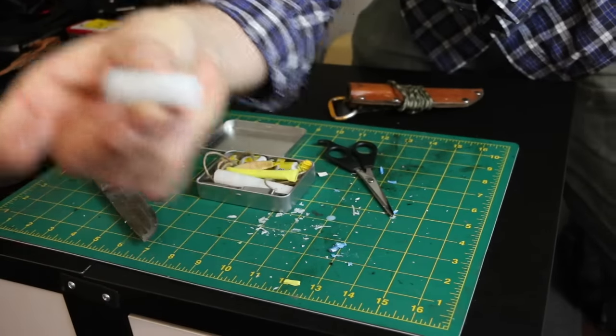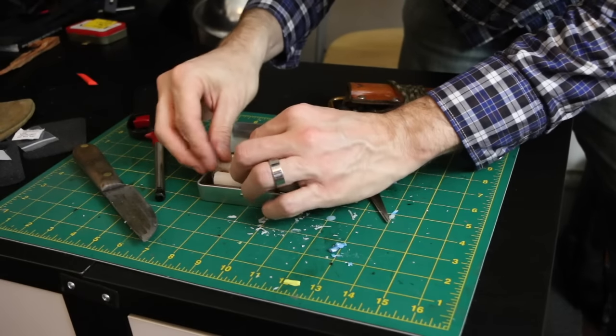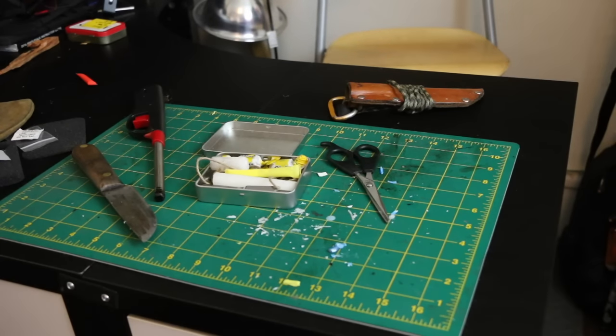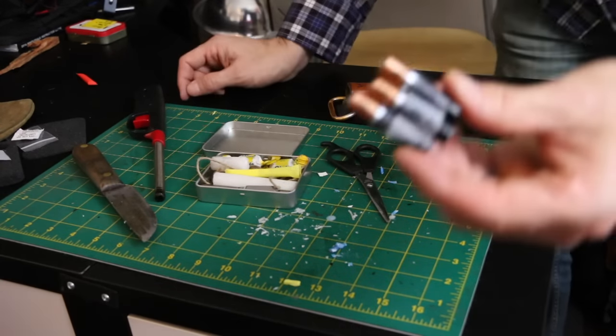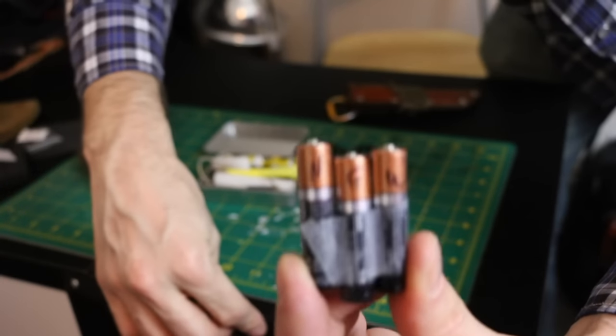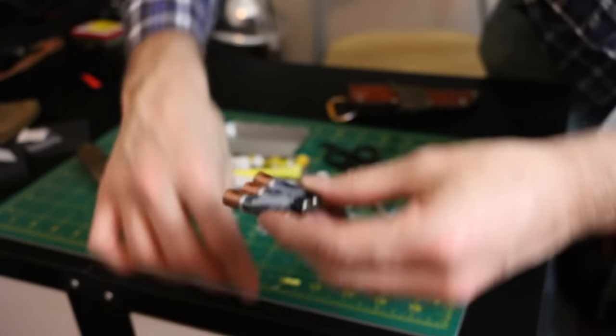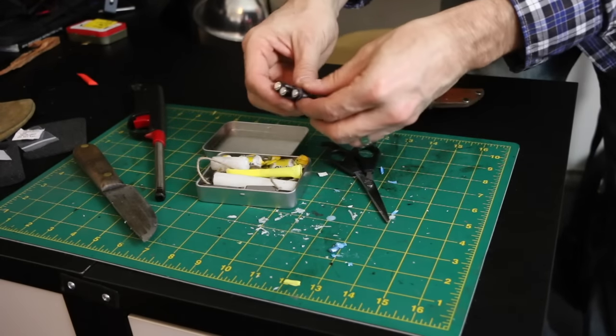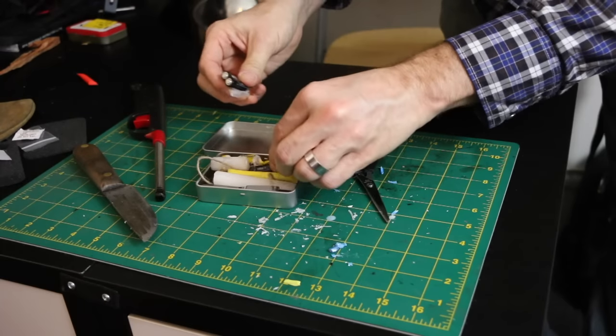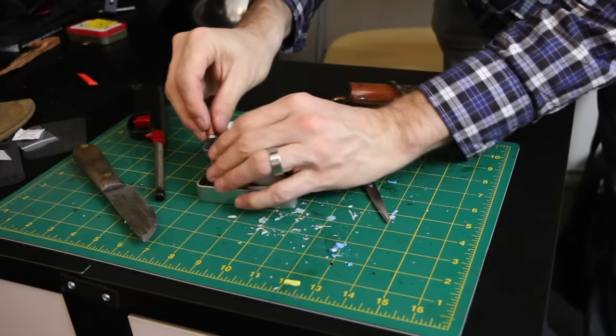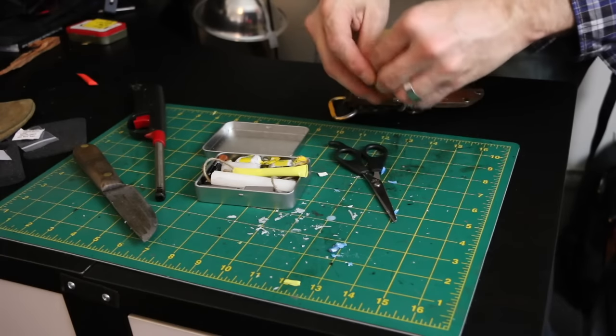Then I have these obviously new batteries. I labeled them new so I'm going to put in there. Just to make them fit, I'll take them apart. So there's one in the flashlight and then three backups, all within this kit.